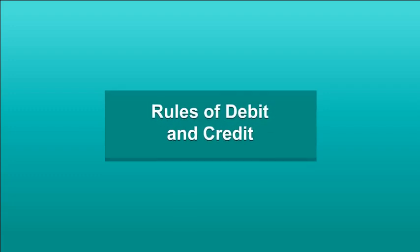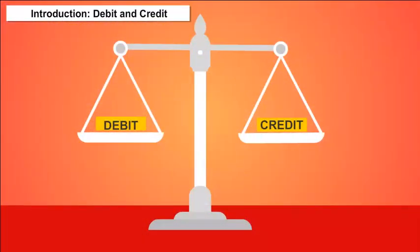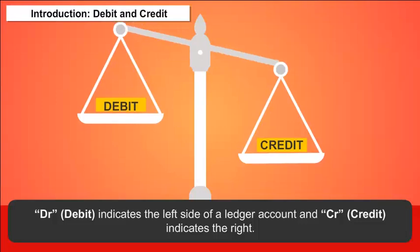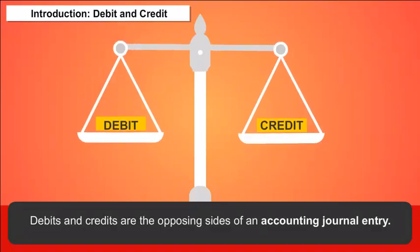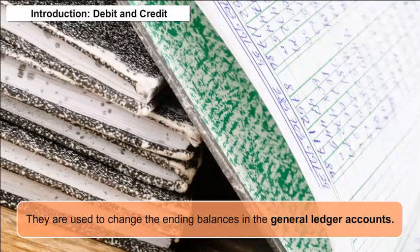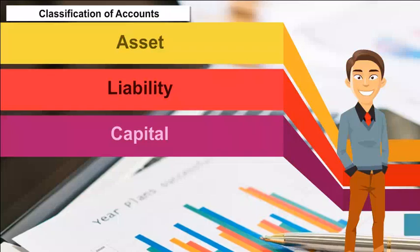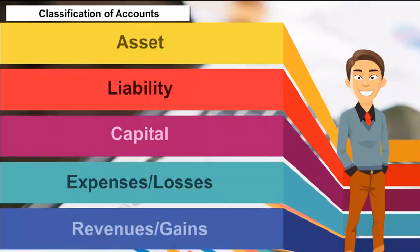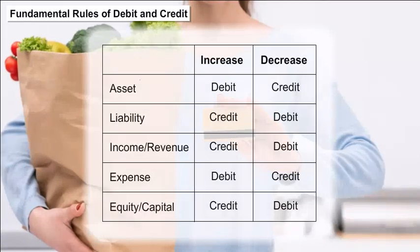Rules of Debit and Credit: In financial accounting or bookkeeping, debit indicates the left side of a ledger account and credit indicates the right. Debits and credits are the opposing sides of an accounting journal entry and are used to change the ending balances in general ledger accounts. All accounts are divided into five categories for the purposes of recording transactions: asset, liability, capital, expenses or losses, and revenues or gains.